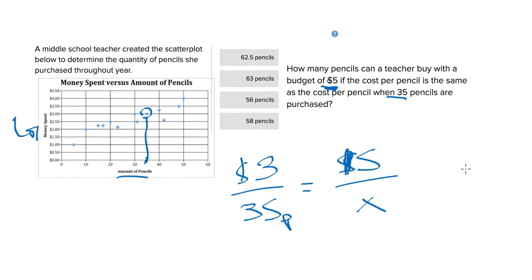So all we have to do now is just solve for the number of pencils we would get for $5 at the same rate. So that would be cross-multiplying. 35 times 5 should give you 175, and that divided by 3 is going to give you, if you plug this into your calculator, something like 58.3.